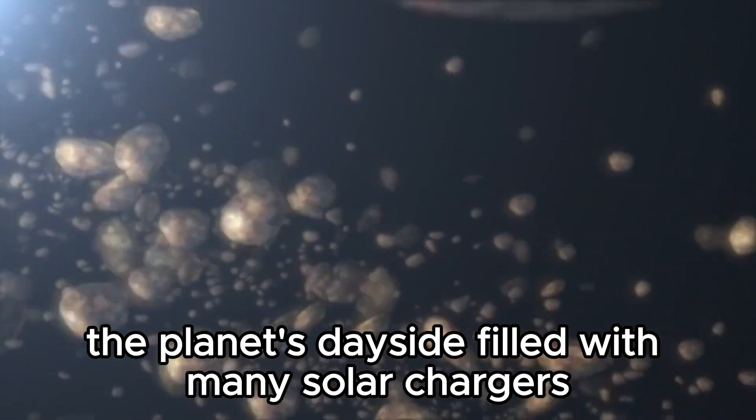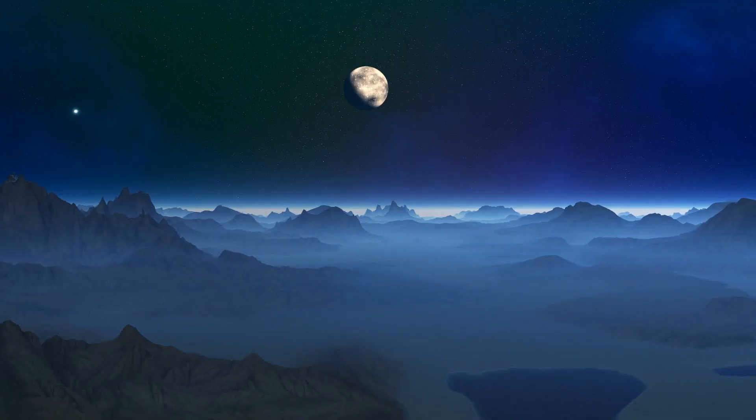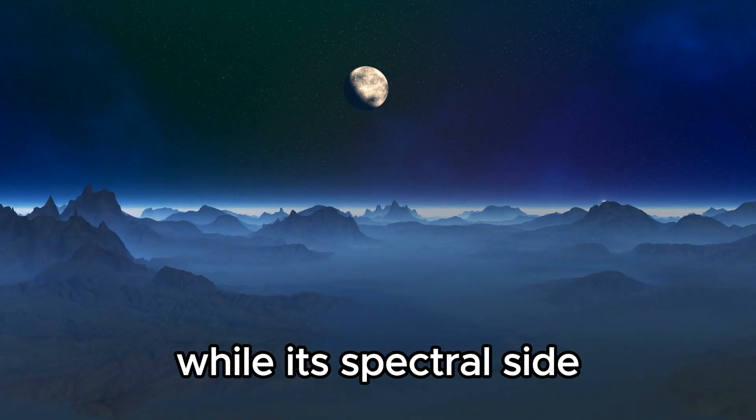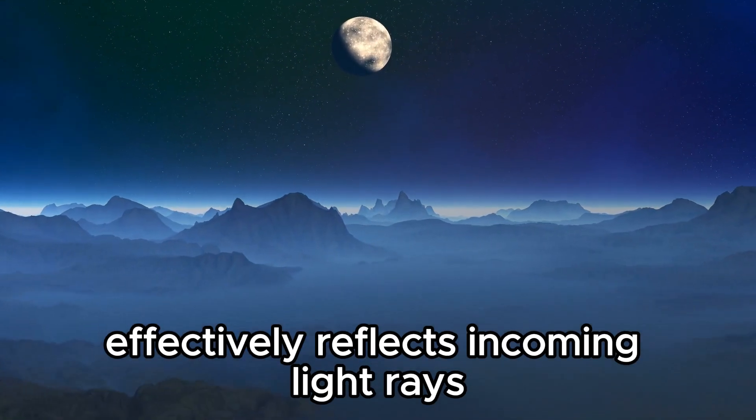Proxima b's unique climate offers a fascinating relationship between its surface features and celestial interactions. The planet's day side, filled with many solar chargers, will harness the star's radiant energy, while its spectral side effectively reflects incoming light rays.